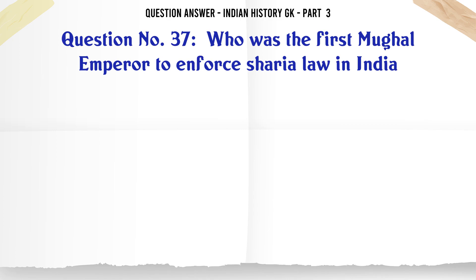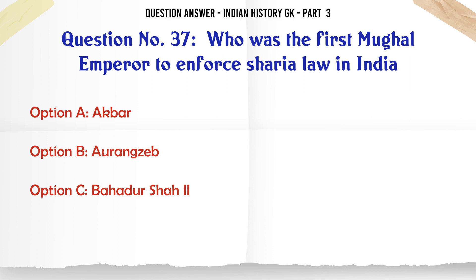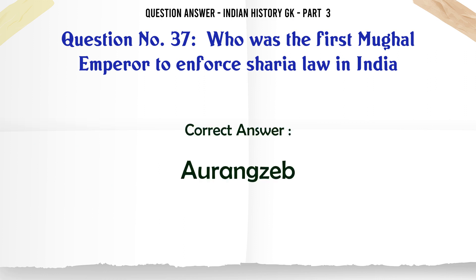Who was the first Mughal emperor to enforce Sharia law in India? A. Akbar, B. Aurangzeb, C. Bahadur Shah II, D. Humayun. The correct answer is Aurangzeb.